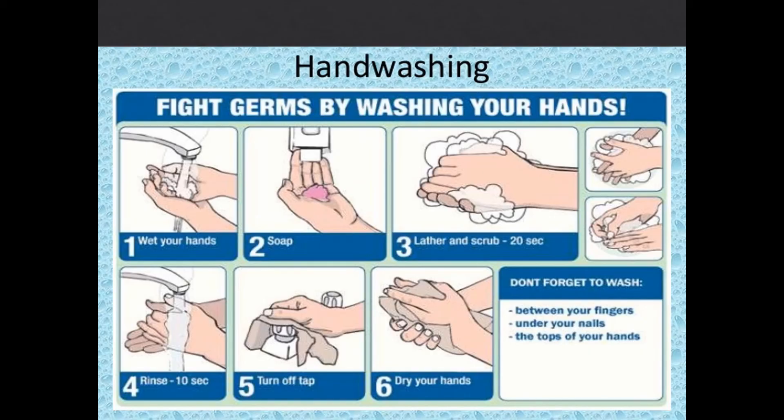The number one form of infection control is hand washing. All facilities with occupational exposure to blood must provide hand washing facilities. If hand washing facilities are not immediately available, such as for emergency responders, then hand sanitizers may be used until hand washing facilities are available. Although gloves are worn as protection against bloodborne pathogens, hands must be washed after removing gloves when exposed to blood or other potentially infectious materials.